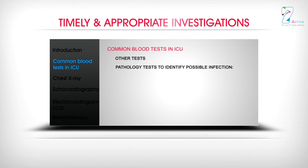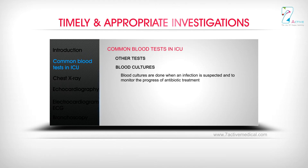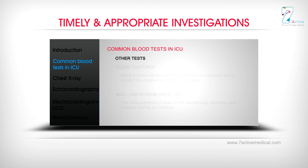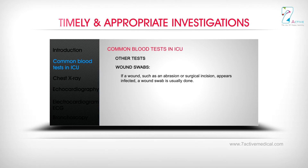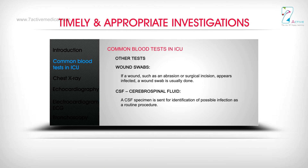Pathology tests to identify possible infection: This will normally involve blood cultures, a sputum and urine specimen, as well as samples from any other sites such as wounds. Blood cultures are done when an infection is suspected and to monitor the progress of antibiotic treatment. The urine specimen is taken to the microbiology laboratory and tested to identify an infection. Wound swabs are done if a wound such as an abrasion or surgical incision appears infected. A cerebrospinal fluid (CSF) specimen is sent for identification of possible infection as a routine procedure.